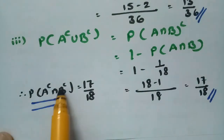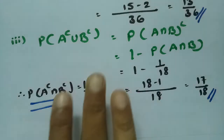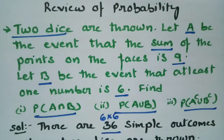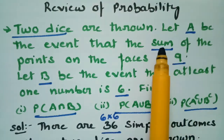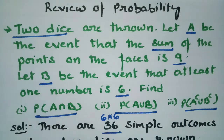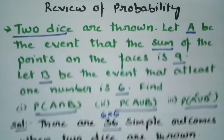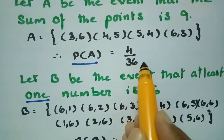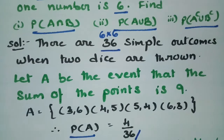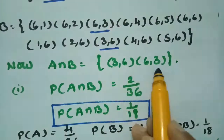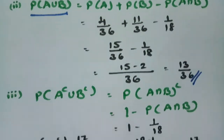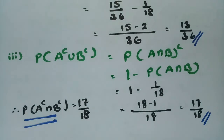Therefore, probability of A complement union B complement is equal to 17 by 18. This is simple if you read the question once or twice. Event A is the sum of the points on the faces is 9, and event B is at least one number is 6. P(A) = 4/36, P(B) = 11/36, P(A∩B) = 2/36. From intersection you can easily find A union B and A complement union B complement as 17 by 18.